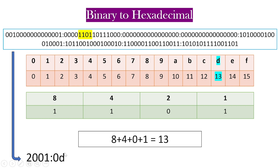So: 8 plus 4 plus 0 plus 1 is equal to 13. Now if we have a two-digit number, we cannot use it directly. Numbers from 0 to 9 we can use directly in hexadecimal. But if the value is 10 to 15, we represent it as an alphabet. That is the hexadecimal rule. So if we get 13, we write the alphabet D. That means the binary value 1101 equals hexadecimal D.